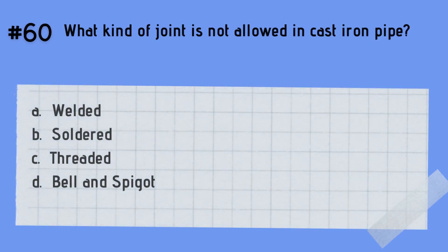Question 60: What kind of joint is not allowed in cast iron pipe? A. Welded. B. Soldered. C. Threaded. D. Bell and spigot. The answer is C — threaded. Threaded joints are not allowed in cast iron pipe. Instead, caulked joints are usually used for bell and spigot cast iron pipe, firmly packed with oakum or hemp. The finished joint shall not extend more than 3.2 mm below the rim of the hub.